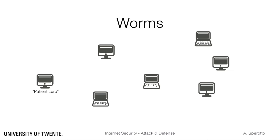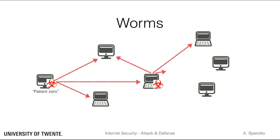We will talk about worms as an example of how malware spreads. A network worm is a self-replicating and self-spreading malware. Once active, a worm will start looking for its next infection. Most likely, it will do that by scanning the network for hosts that run a specific, vulnerable service. After that, the worm will try to infect the target host by installing itself on the host, and once there, it will try to spread again.